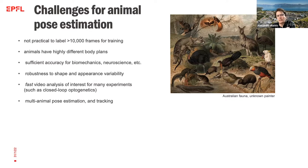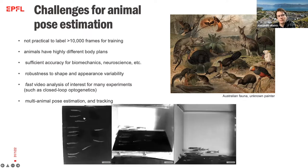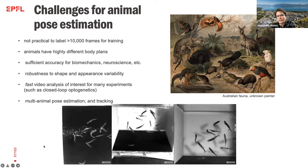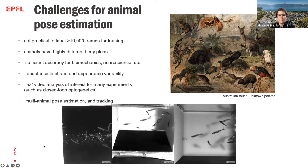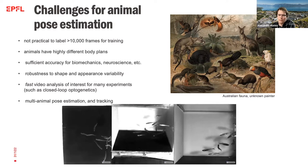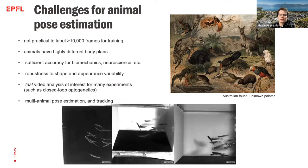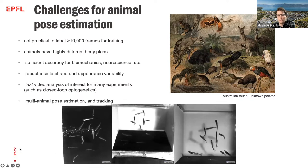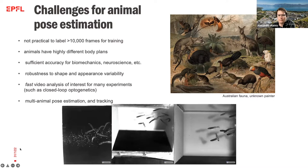Another challenge is that in experimental neuroscience in particular, people are interested in performing closed-loop experiments where you would, for example, perturb a brain circuit if an animal does a particular thing. And in order to allow that, pose estimation algorithms have to be really fast. Finally, especially for situations with multiple animals, there are additional challenges because animals may interact much more closely than humans, and the amount of occlusions is much more common — that is a huge problem for pose estimation algorithms.